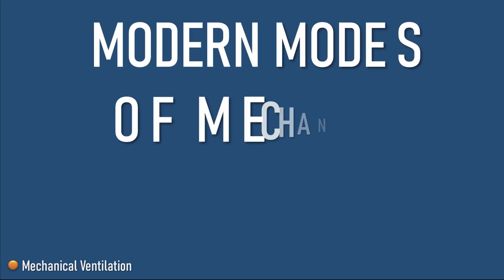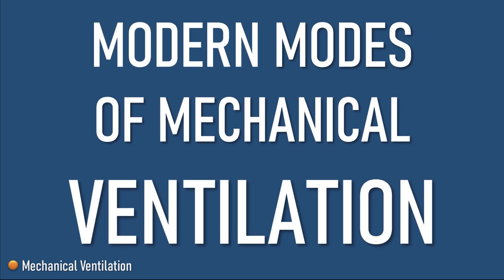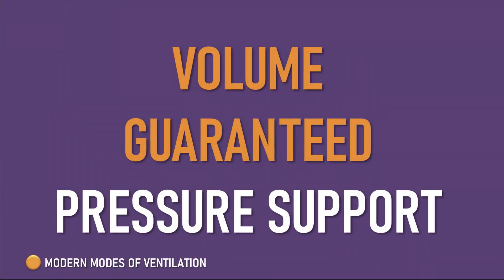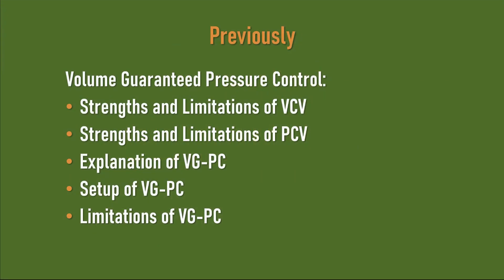This is a section on modern modes of mechanical ventilation and this tutorial is on volume support, which is also known as volume guaranteed pressure support or volume assured pressure support. In the previous tutorial I discussed volume guaranteed pressure control and the strengths and limitations of volume control ventilation versus pressure control, and why volume guaranteed pressure control is a neat solution to many of those problems. I explained how to set it up, its limitations, but in summary it's one of those modes you could use as your default mode in the ICU because it just works really well.